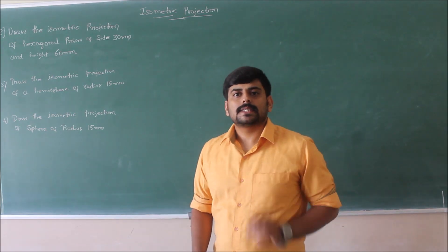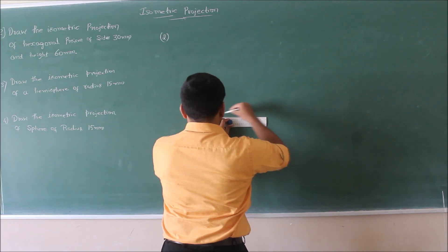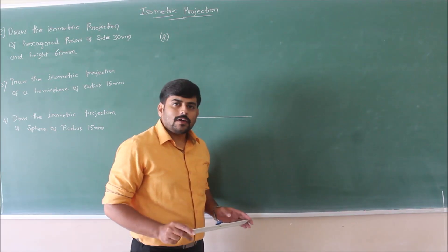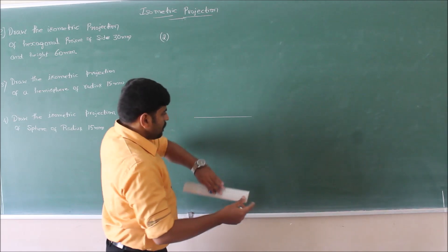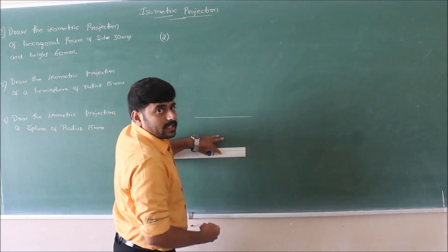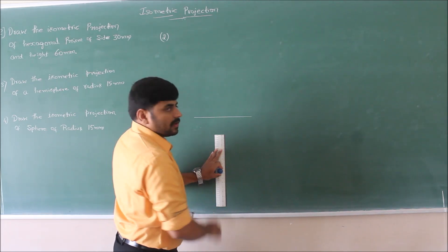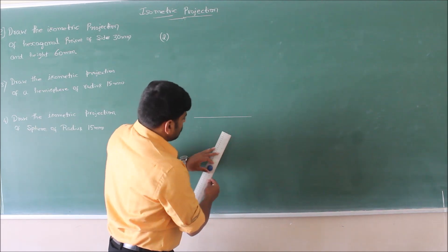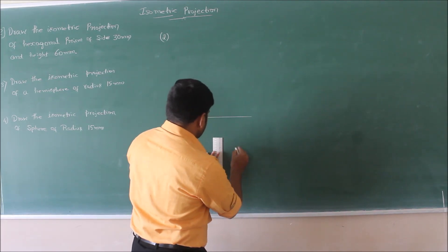The side is 30 millimeters and height is 60 millimeters. First let us draw the top view of the hexagonal prism. You can orient the hexagon with a corner on both sides or with an edge on both sides — whichever is convenient. Let me take edge on either side.